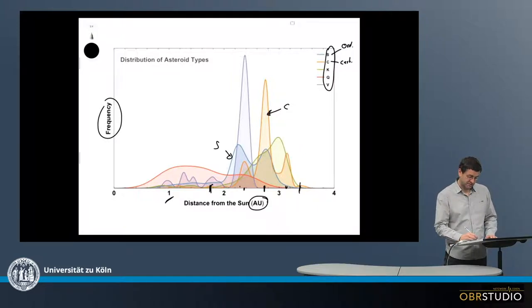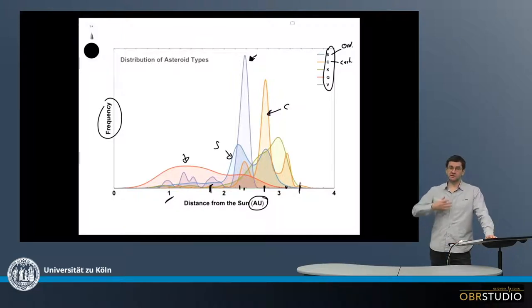The B-type asteroids have only one peak, while the Q-types here have a very broad peak, so they are more distributed throughout the entire asteroid belt.